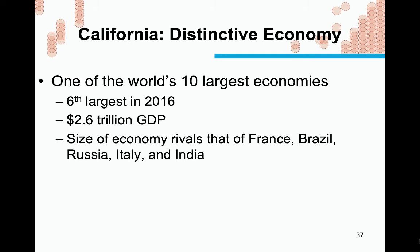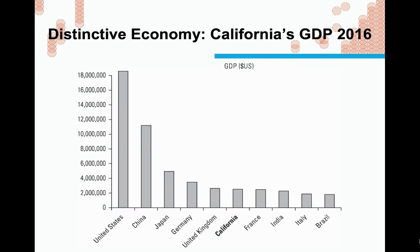Now shifting to the Van Vechten text on California politics. California is a really interesting place — one of the world's ten largest economies. In 2016 its GDP was 2.6 trillion dollars, rivaling the economies of France, Brazil, Russia, Italy, and India, making it roughly the sixth largest economy in the world. California is responsible for a big chunk of the U.S. economy, way more than any other state.